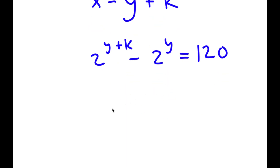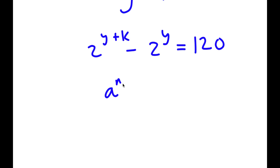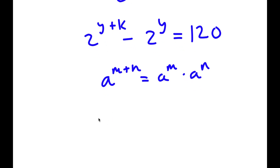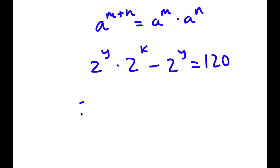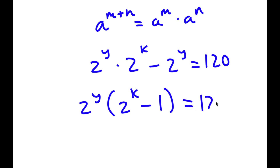If I have something in the form a to the power of m plus n, this equals a to the power of m times a to the power of n. So 2 to the power of y plus k becomes 2 to the power of y times 2 to the power of k, minus 2 to the power of y, equals 120. Factoring out 2 to the power of y gives me 2 to the power of y times the quantity 2 to the power of k minus 1, equals 120.